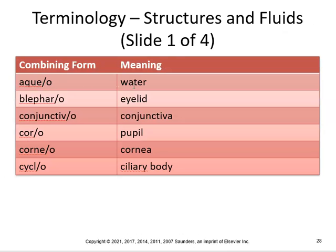Now let's put it together. Aqueous — water — so aqueous humor is a watery fluid that circulates through the posterior and anterior chambers of the eye. Blephar means eyelid, so blepharitis would be inflammation of the eyelid. Conjunctiva — conjunctivitis is inflammation of the conjunctiva, pink eye. Core means pupil, so anisocoria is where the pupils are unequal in size.